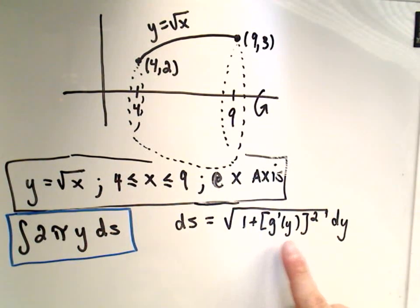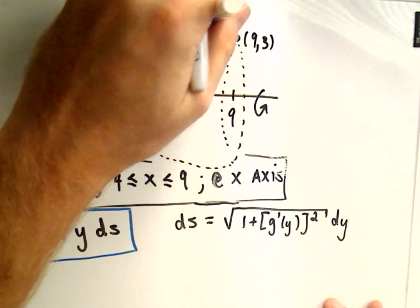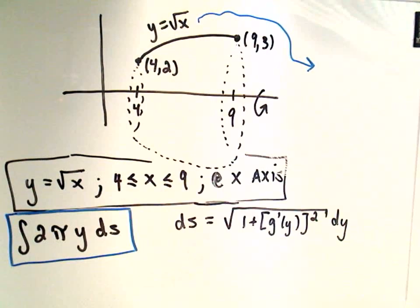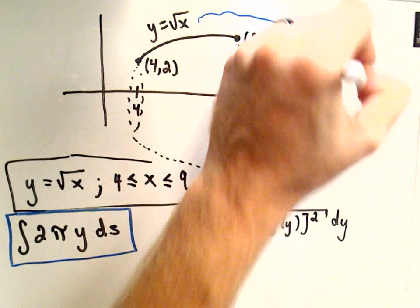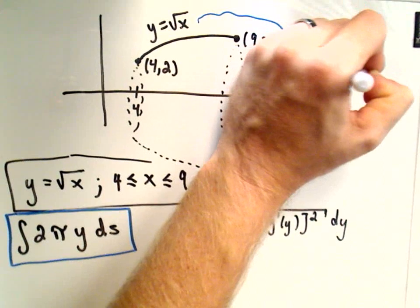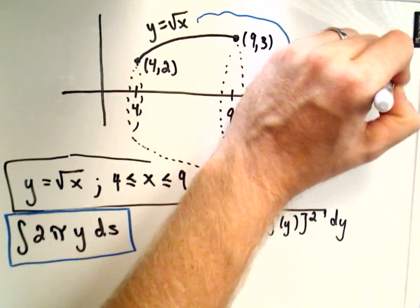Okay, so what this means is, first off, we're going to have to get our function in terms of y's. Well, if I take my function y equals square root of x and just solve for x, we'll get simply x equals y squared. So there's our g of y.